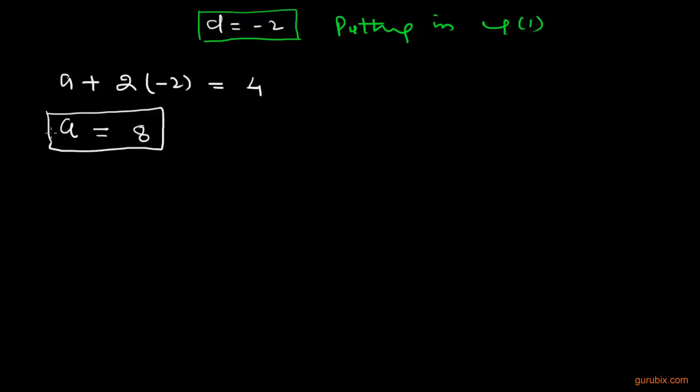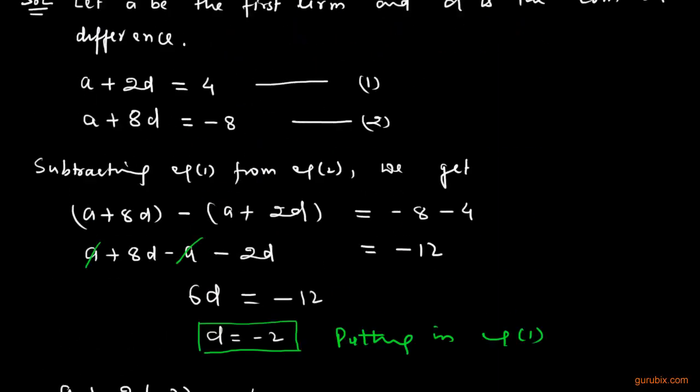Now we can easily find out which term of this AP is 0. This means we are given the nth term, this means A_n is 0.